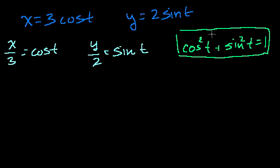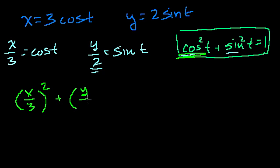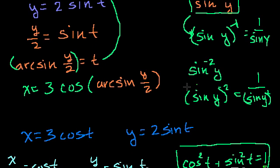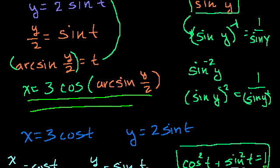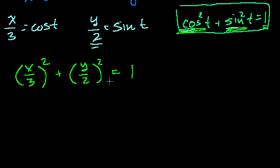Then we can use this trigonometric identity. Instead of cosine of t, substitute x over 3, and instead of sine of t, substitute y over 2. You get x over 3 squared plus y over 2 squared is equal to 1. Now this is starting to look a lot better. We could simplify it: x squared over 9 plus y squared over 4 is equal to 1.